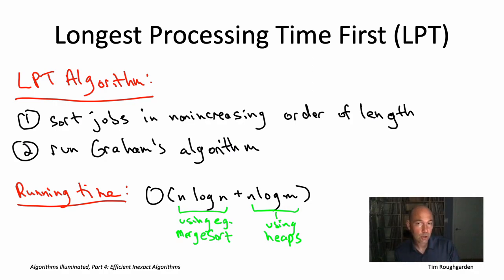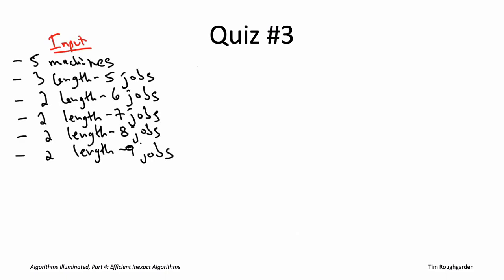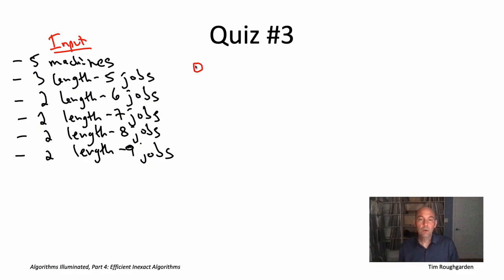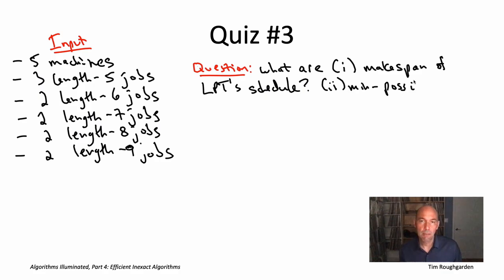To get a feel for that, let's move on to another quiz. The input has five machines and 11 jobs with five different possible lengths: three jobs with length five, and two jobs each of lengths six, seven, eight, and nine. The question is: what is the makespan of the schedule output by the LPT algorithm, and how does that compare to the minimum possible makespan achievable using exhaustive search?